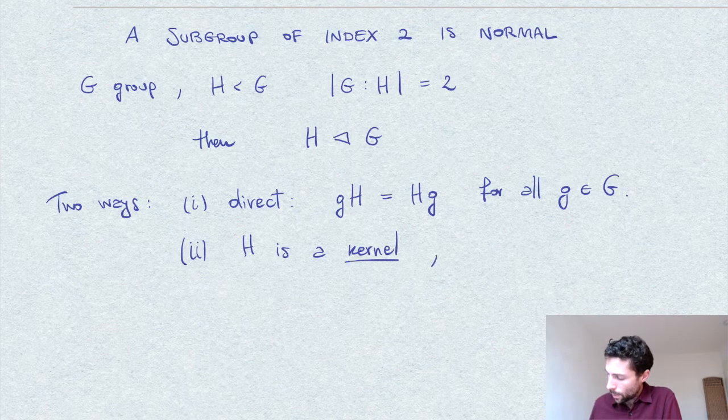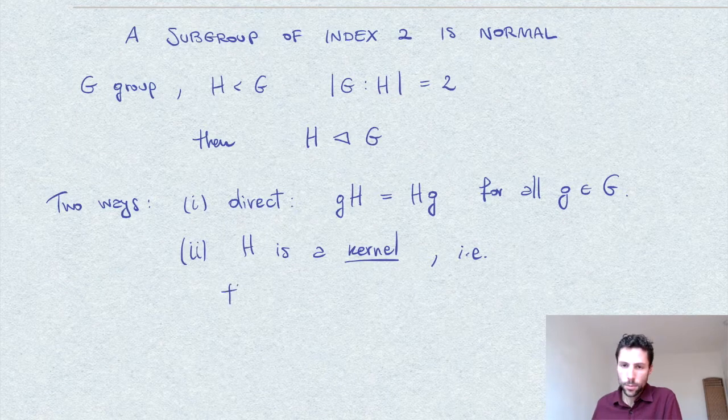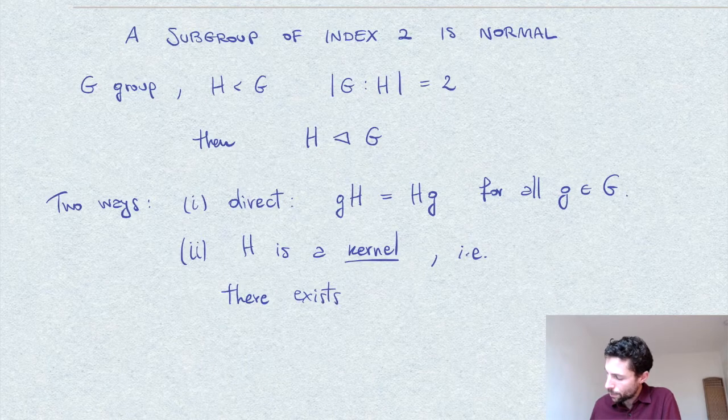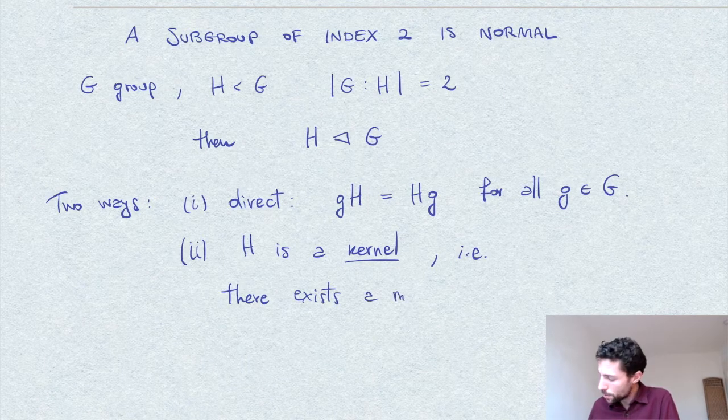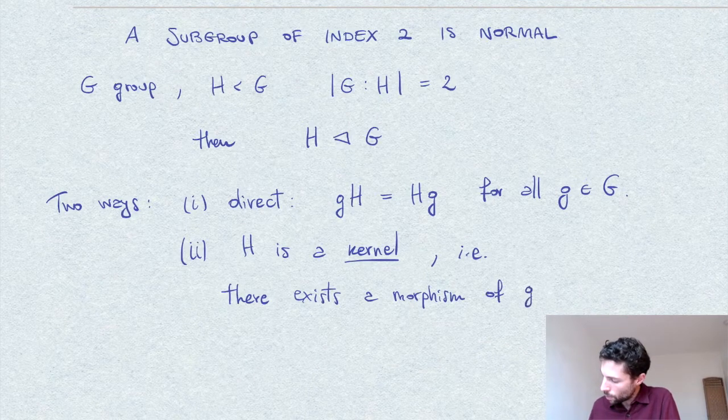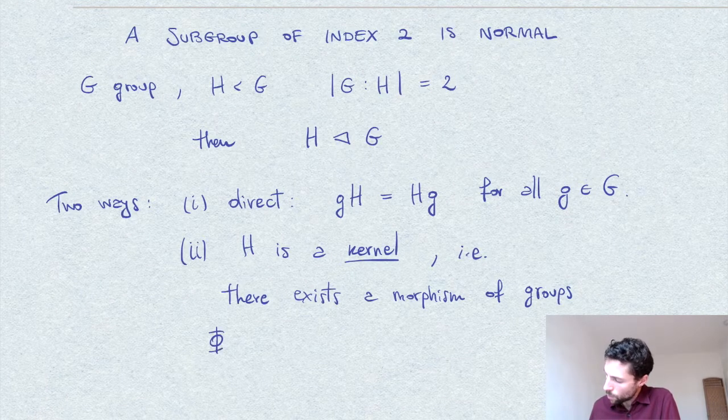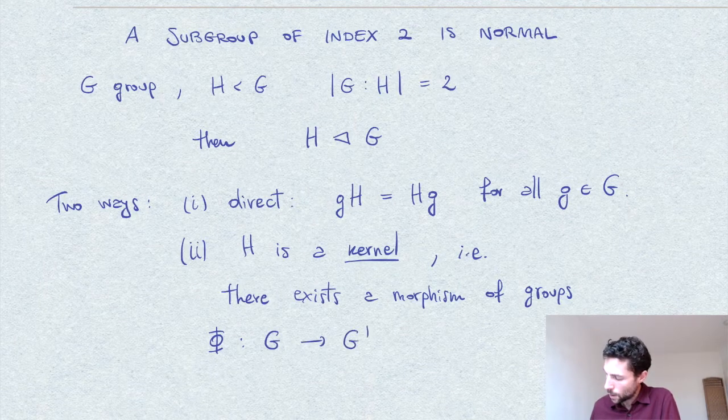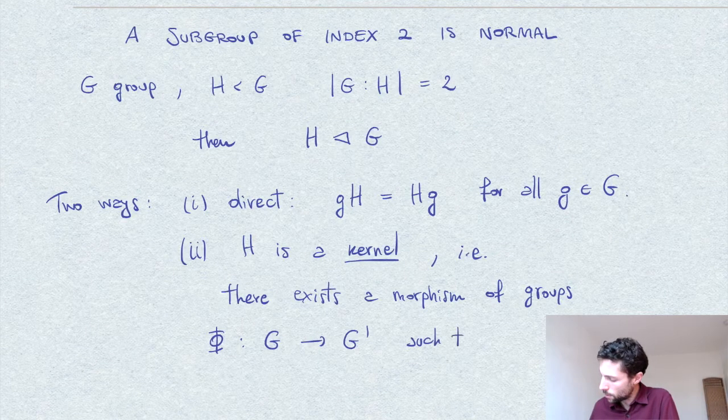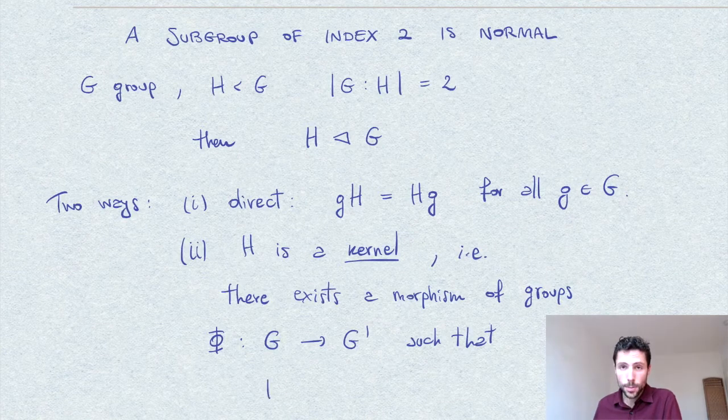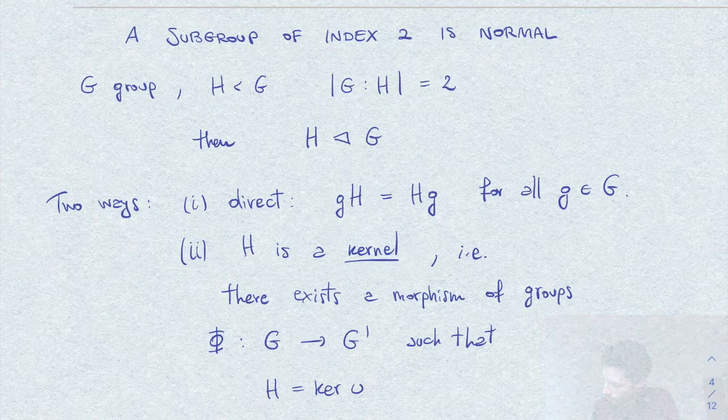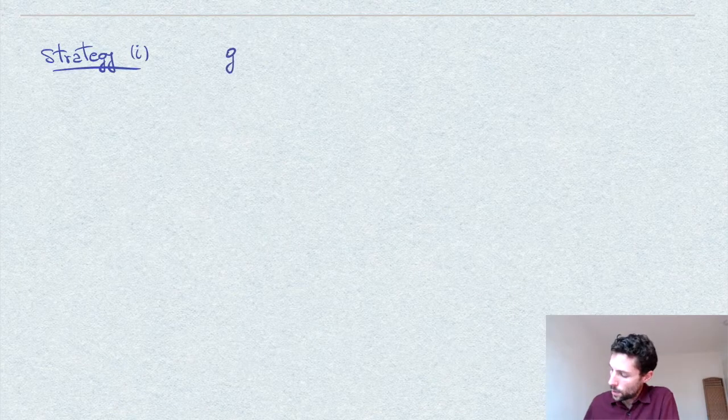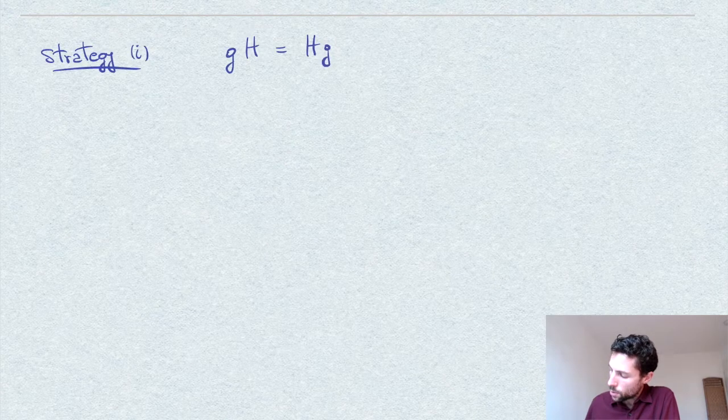A kernel. That is, there exists a morphism of groups such that the kernel of this morphism is precisely H. So we need to show this identity of the left cosets of G equal to the right cosets.